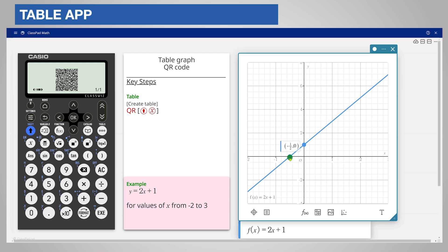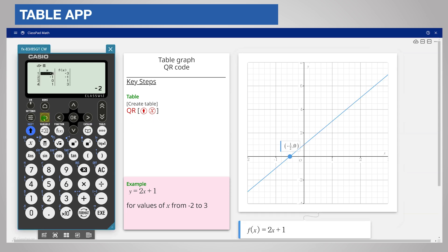If your table has two functions or equations, then both graphs will be displayed. To return to the table on your calculator, press the back key.